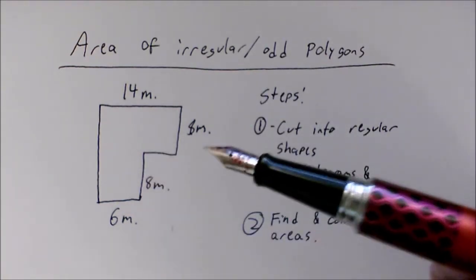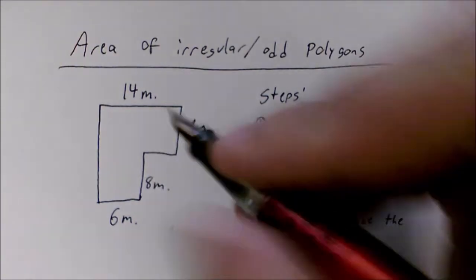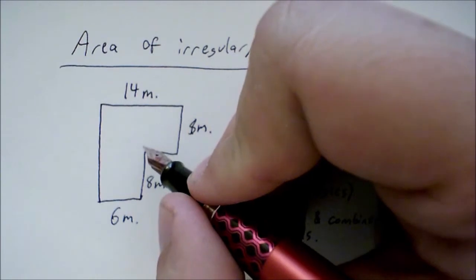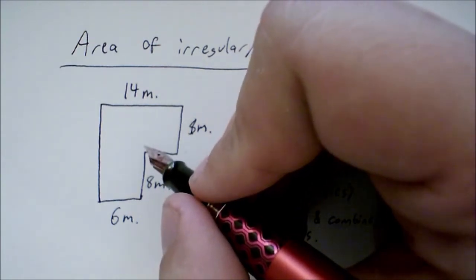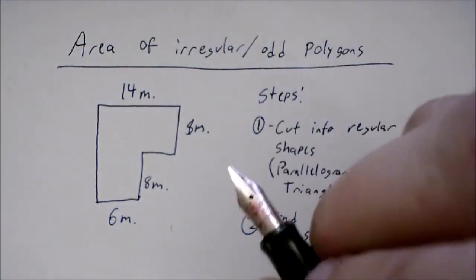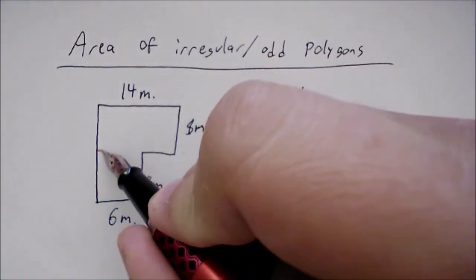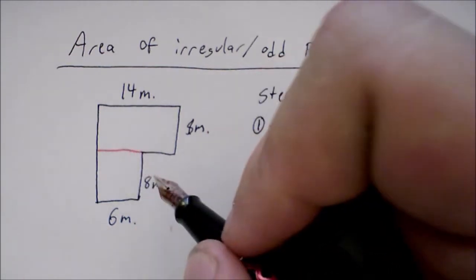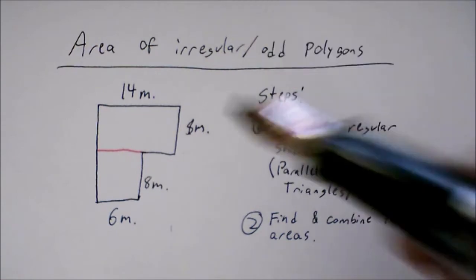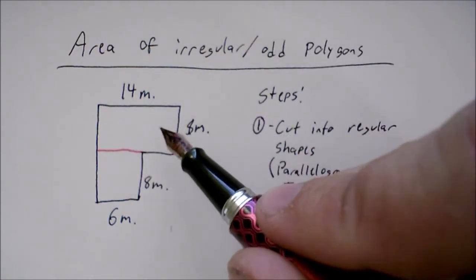For example, with this shape, if I were to draw my line going vertically, like right here, I would be able to see some measurements, but I wouldn't necessarily be able to immediately find the area of both shapes. Versus if I drew my line horizontally, from side to side right here, the way the measurements are written, I can already easily find the area of both the top rectangle.